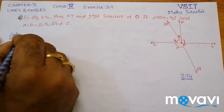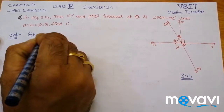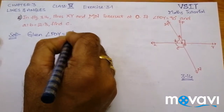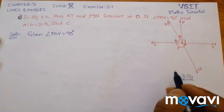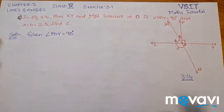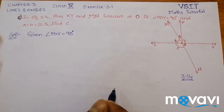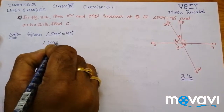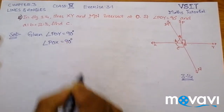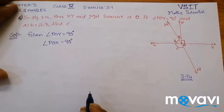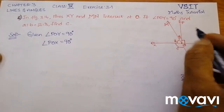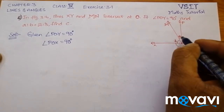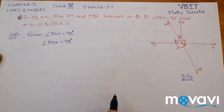From the question, angle POY is equal to 90 degrees. If POY is 90 degrees then POX is also 90 degrees. So angle POX equals 90 degrees. Since this region is 90 degrees, we can write angle A plus angle B is equal to 90 degrees.